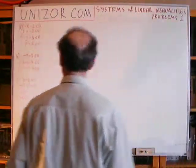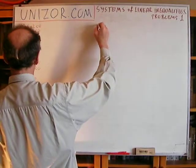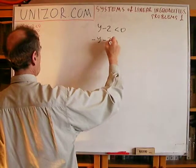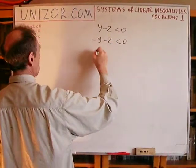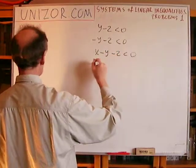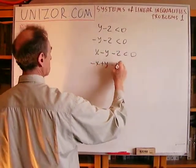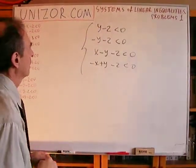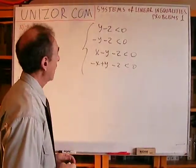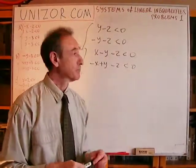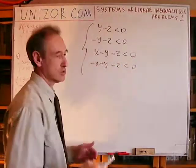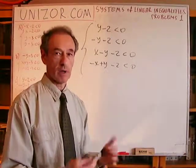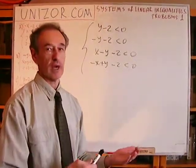The third system: y minus 2 less than 0, minus y minus 2 less than 0, x minus y minus 2 less than 0, minus x plus y minus 2 less than 0. We have four different straight lines to draw, then we choose which half of the plane we need relative to each line, and intersect them.